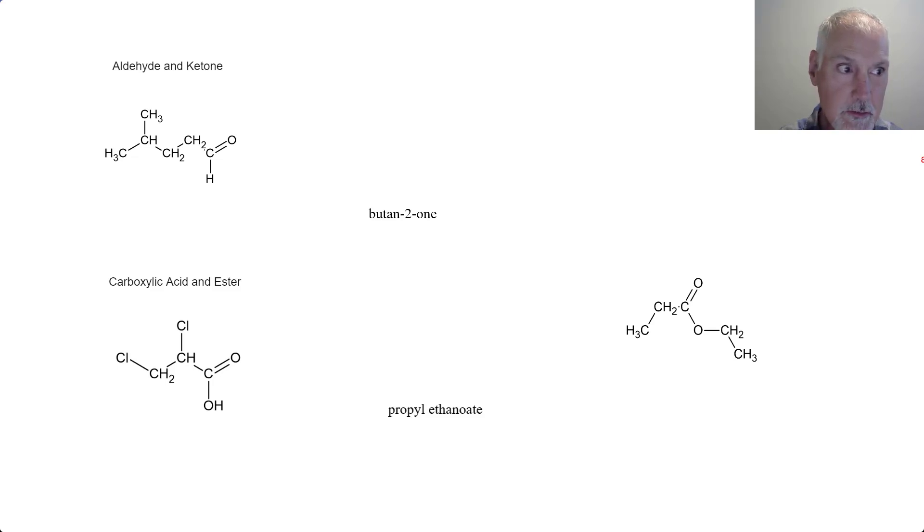Now moving on to aldehydes and ketones. In the case of an aldehyde, the suffix is -anal. And ketone, -anone. So what do we have first here? I notice the presence of the carbonyl group at the end of the chain. So that suggests to me an aldehyde. It's a five carbon chain, so again I'm going to start with pentane. Remove that, and then pentanal.